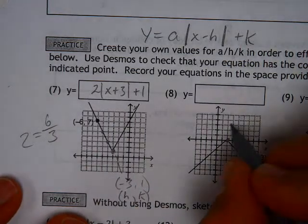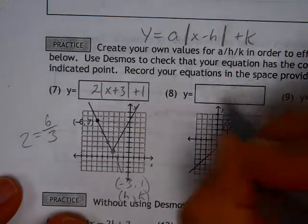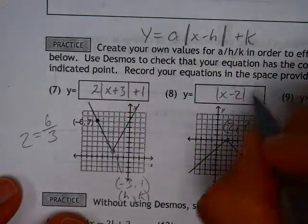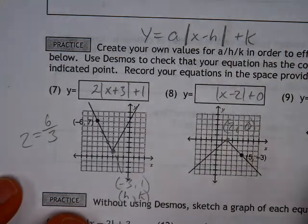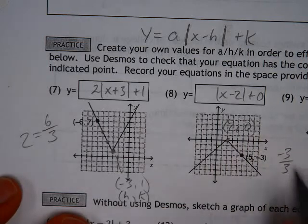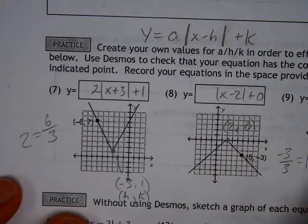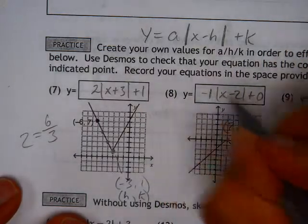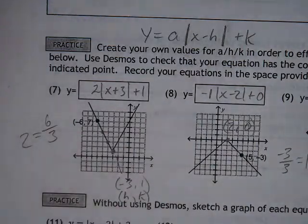So a quick version of that again: my vertex is at 2, 0. My absolute value is going to be x minus 2, change the sign, plus 0, which is unnecessary but also useful. The fact that we go from here down 3 and over 3, that's negative 3 over 3. Okay, the slope is 1. The orientation of this is negative, so a negative 1 times, or just a negative out in front, would be sufficient.